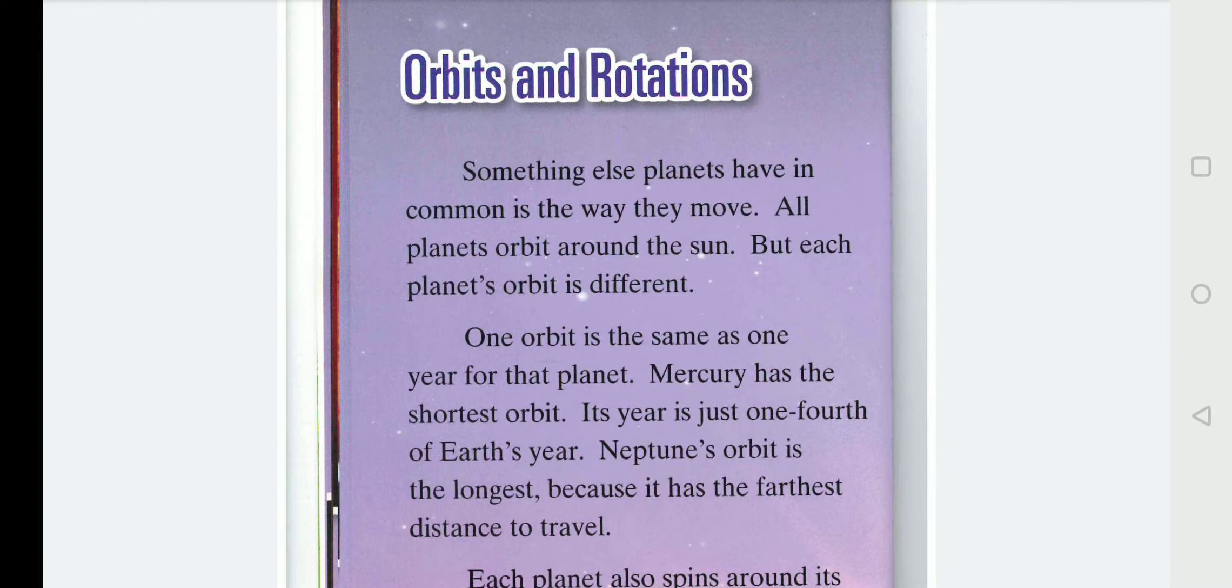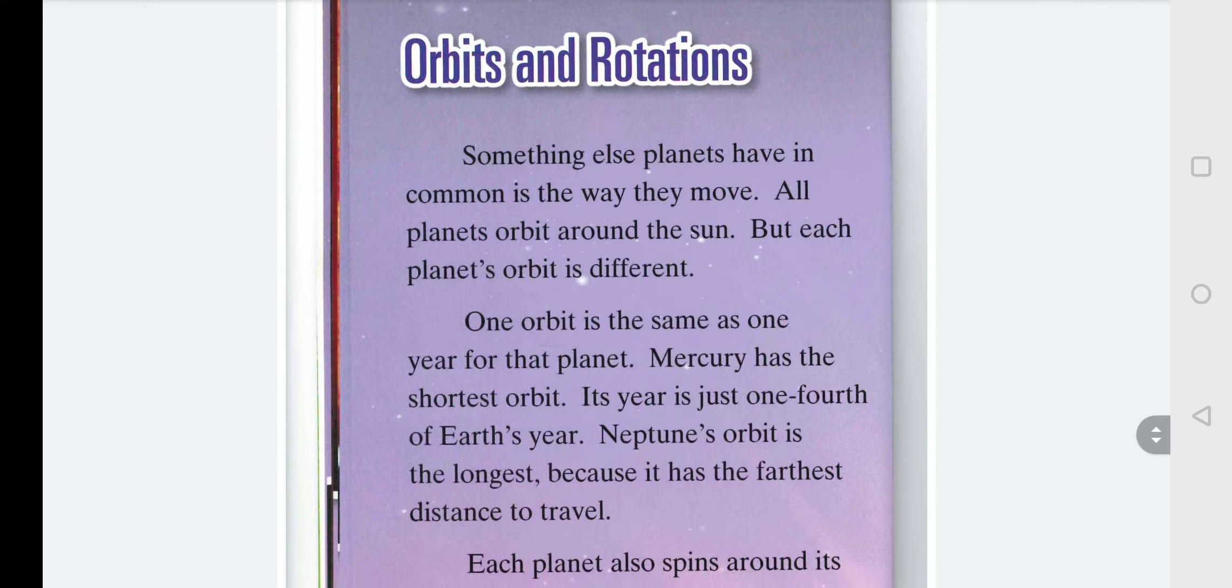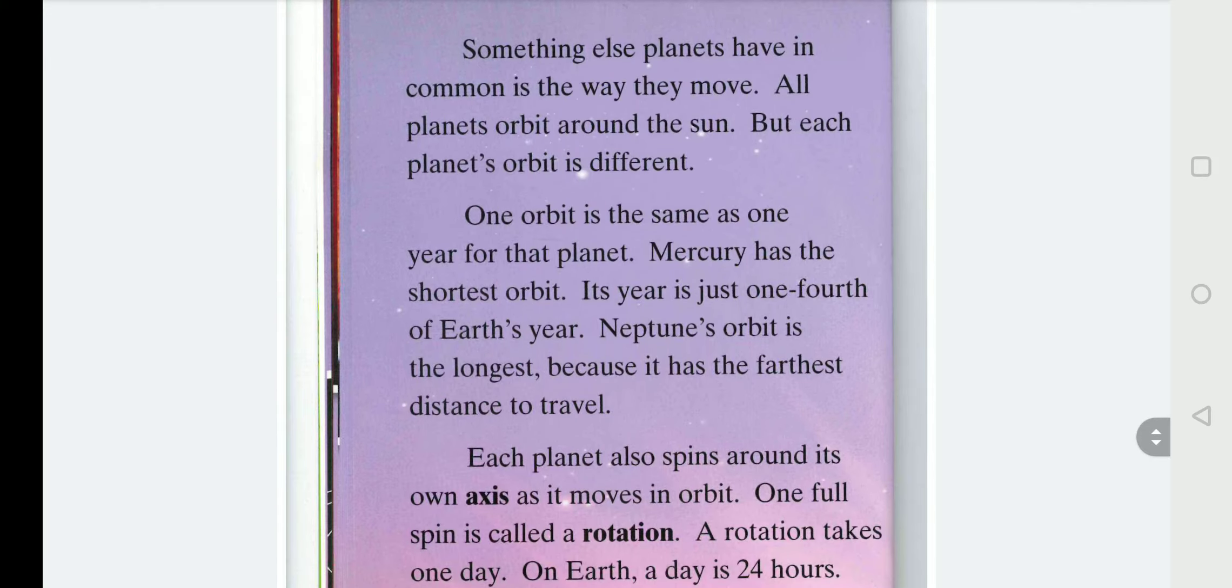Orbits and Rotations. Something else planets have in common is the way they move. All planets orbit around the Sun, but each planet's orbit is different. One orbit is the same as one year for that planet. Mercury has the shortest orbit. Its year is just one fourth of Earth's year. Neptune's orbit is the longest, because it has the farthest distance to travel.